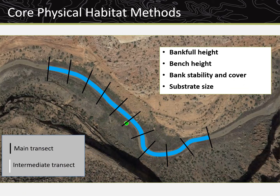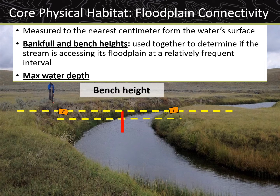The core physical habitat methods, also referred to as PHAB, are measured at all 11 main transects. The methods are bankful height, bench height, bank stability and cover, and substrate size. Bank stability and cover and substrate size are also collected at the 10 intermediate transects. Bankful height and bench height are measured to the nearest centimeter from the water surface. The max water depth is also measured at each transect, and together these measurements are used to determine if the stream is accessing its floodplain at a relatively frequent interval.